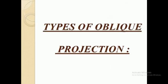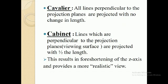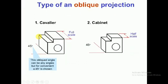Now we will discuss types of oblique projection. Oblique projection has two types: cavalier and cabinet. In cavalier projection, all lines perpendicular to the projection plane are projected with no change in length. In cabinet projection, lines are projected with half the length — this is the major difference. In the diagram, cavalier has full scale measurements while cabinet has half scale measurement, with 45 degrees chosen as the arbitrary angle.